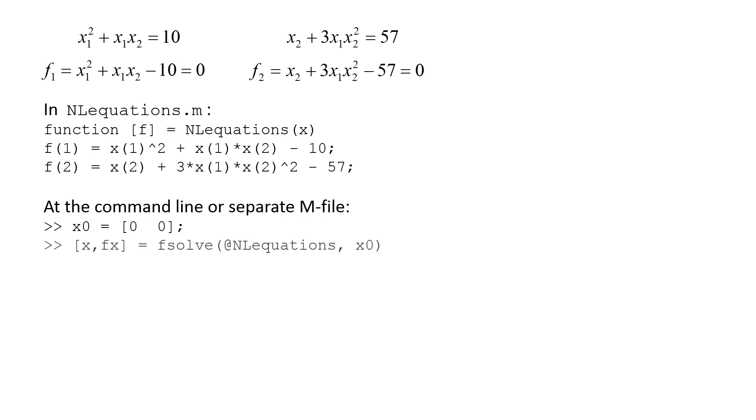Next, we invoke fsolve with the statement x comma fx in brackets equals fsolve open parenthesis at nlequations comma x0 close parenthesis. After executing the statement, MATLAB tells us the value of x1 is 2 and the value of x2 is 3. The corresponding values of f1 and f2 are on the order of 10 to the negative 10 and smaller, which means x1 and x2 are very close to the actual solution.